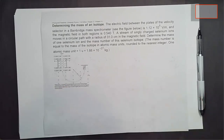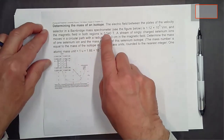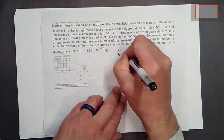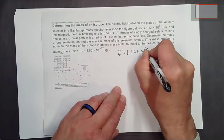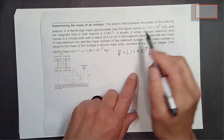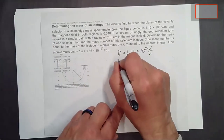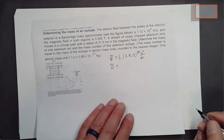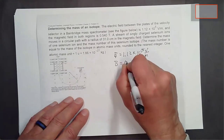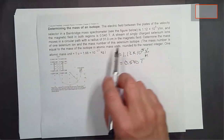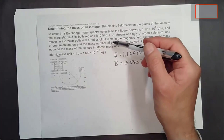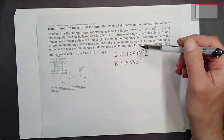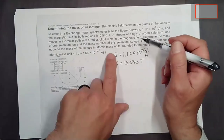The problem says: the electric field between the plates of the velocity selector in a Bainbridge mass spectrometer is 1.12 × 10⁵ V/m. The magnetic field in both regions is 0.540 Tesla. A stream of singly charged selenium ions moves in a circular path with a radius of 31.0 centimeters. Determine the mass of one selenium atom and the mass number of this selenium isotope.